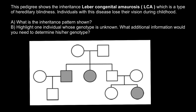Can it be an X-linked recessive genetic disorder? In order for this female to be affected, she would need two defective X chromosomes — one from her mother, who could be a phenotypically normal carrier, and one from her father's side. But in that case, her father would manifest this genetic disorder because males are hemizygous — with only one X chromosome, this male would be affected. So this is not an X-linked recessive genetic disorder.